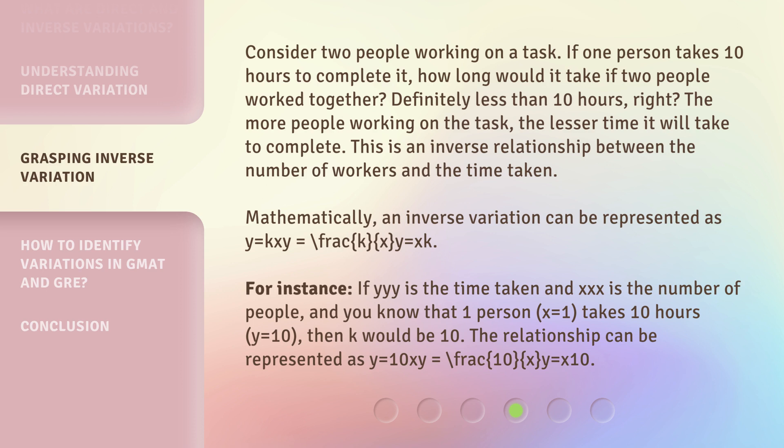Mathematically, an inverse variation can be represented as y = k/x. For instance, if y is the time taken and x is the number of people, and you know that one person (x=1) takes 10 hours (y=10), then k would be 10. The relationship can be represented as y = 10/x.